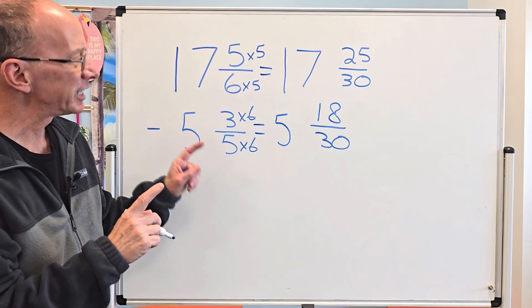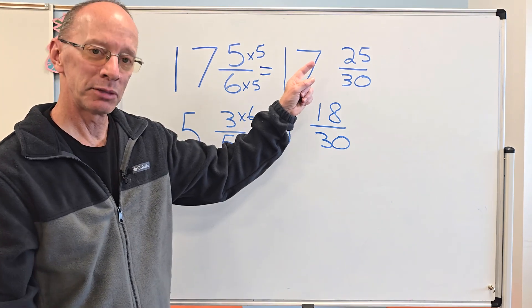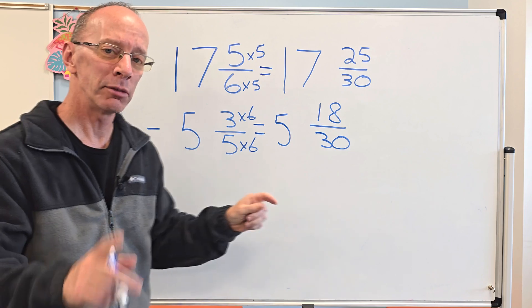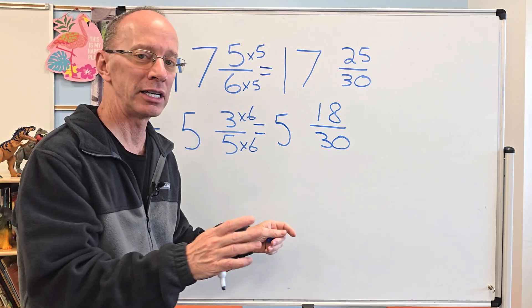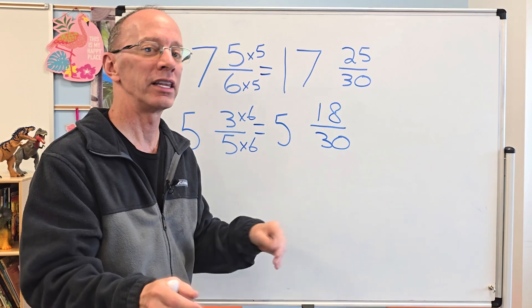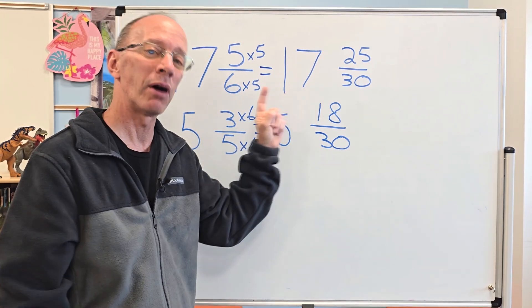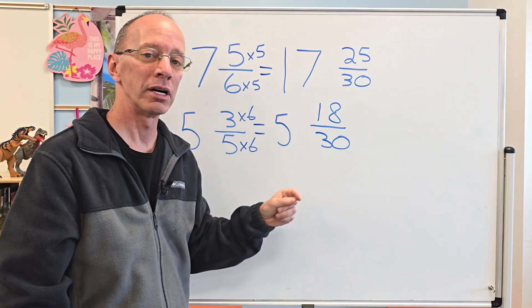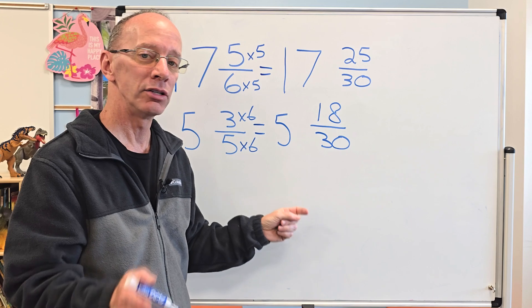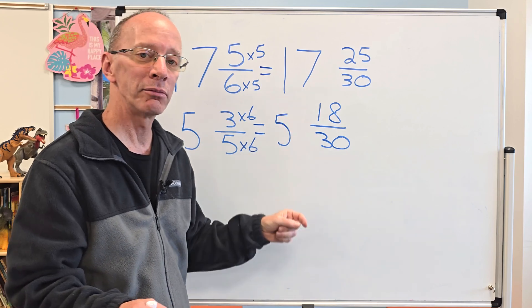Now I check to see I'm going to be subtracting, so it's 25 minus 18. There's going to be a chance sometime that you might be subtracting like 3 minus 4 and you end up with a negative number and need to borrow from the whole number, but in this case we don't need to do any of that.